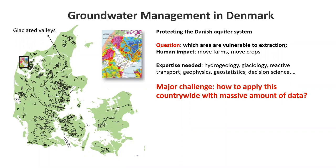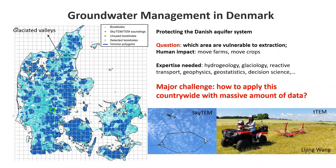That's also why I want to start with a leading example. I've been very much involved with managing the groundwater system in Denmark. There, the goal for the Danish government is to protect the Danish groundwater system and manage aquifer extraction. Denmark has a very complicated subsurface system — the glaciated valley system — shown as black lines on the left, which are essentially valleys in which the groundwater resides. To manage that, the Danish government has mandated large-scale exploration using SkyTEM and TTEM geophysical data. SkyTEM is a helicopter system with a transmitter loop that measures subsurface electrical resistivity. For more detailed information at the agricultural scale, they drag that system on the ground. Here you see my student Li Jing Rang doing that last summer in collaboration with the University of Aarhus.